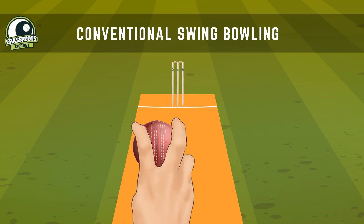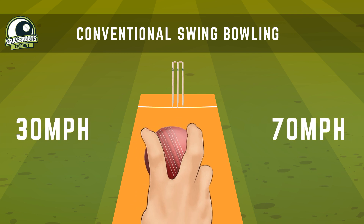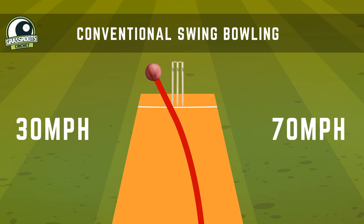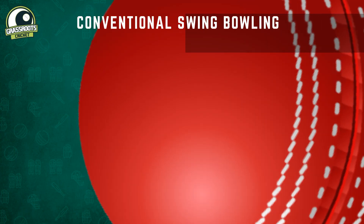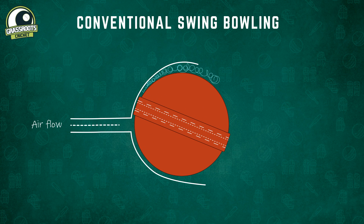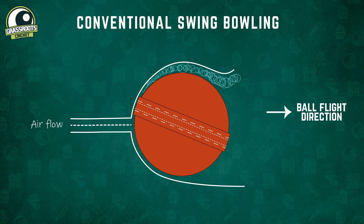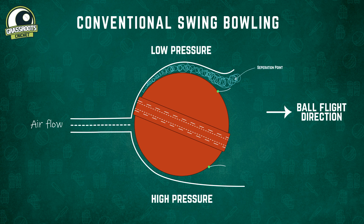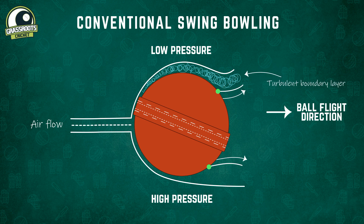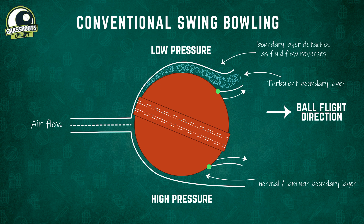Conventional swing is generally extracted from balls bowled between 30 miles per hour and 70 miles per hour. In scientific terms, swing is a net sideways force on the ball which requires a pressure difference on either side of the ball. This is caused by the position of the separation points. A turbulent boundary layer is able to counteract the pressure difference better than a normal boundary layer because of its increased kinetic energy and thus separates later too.